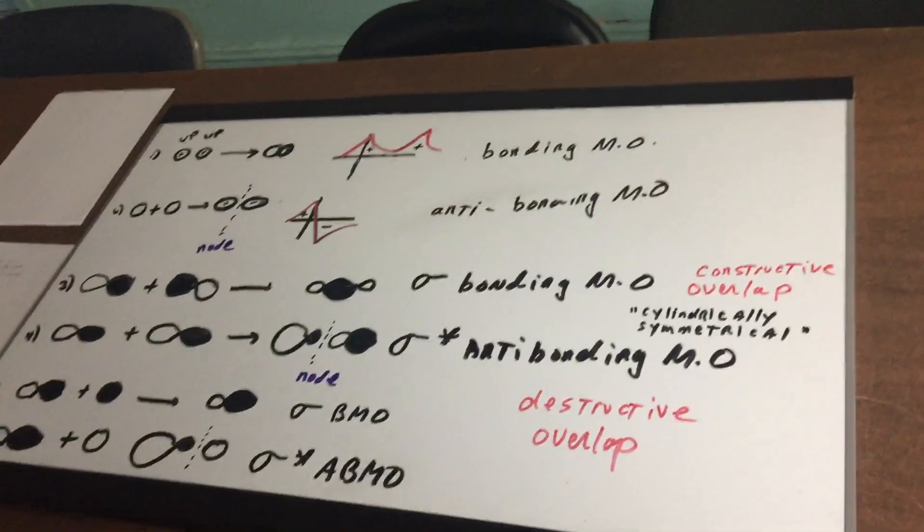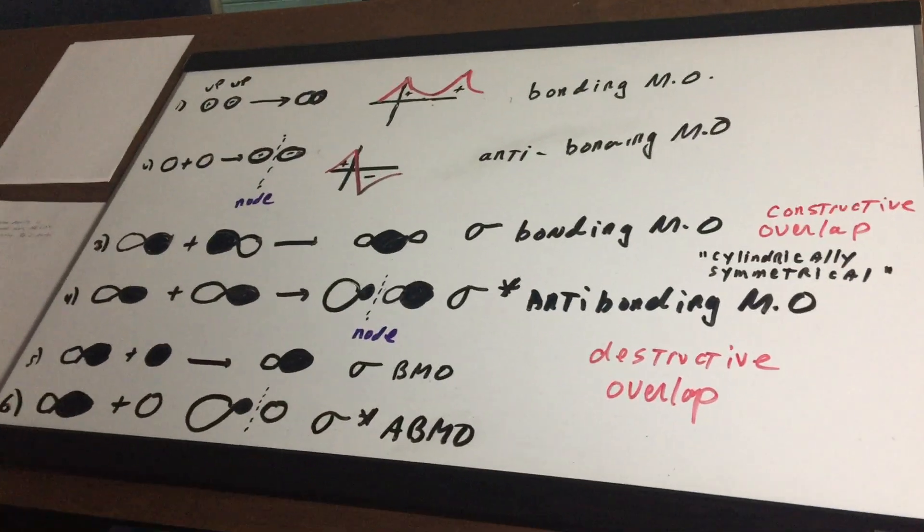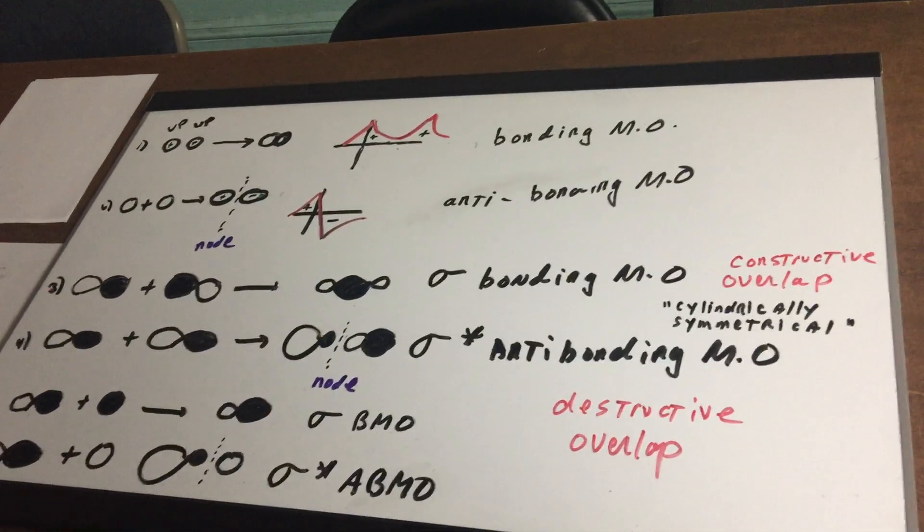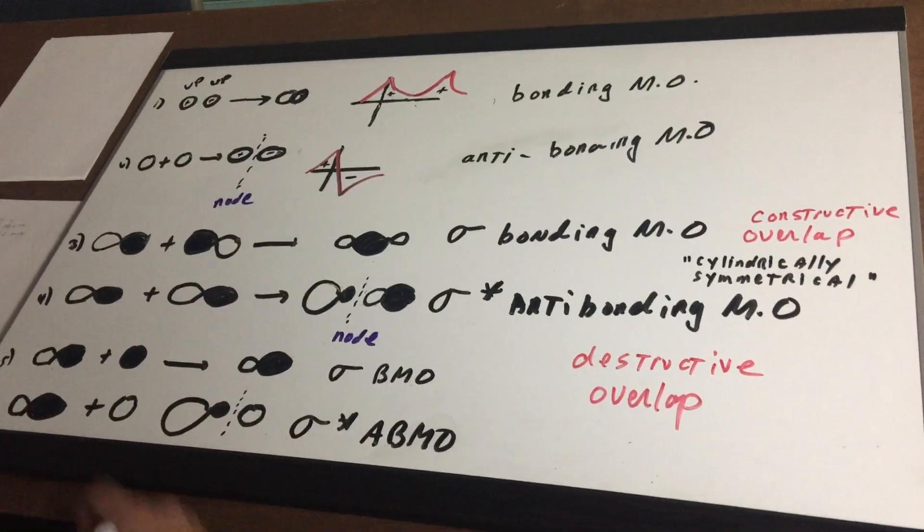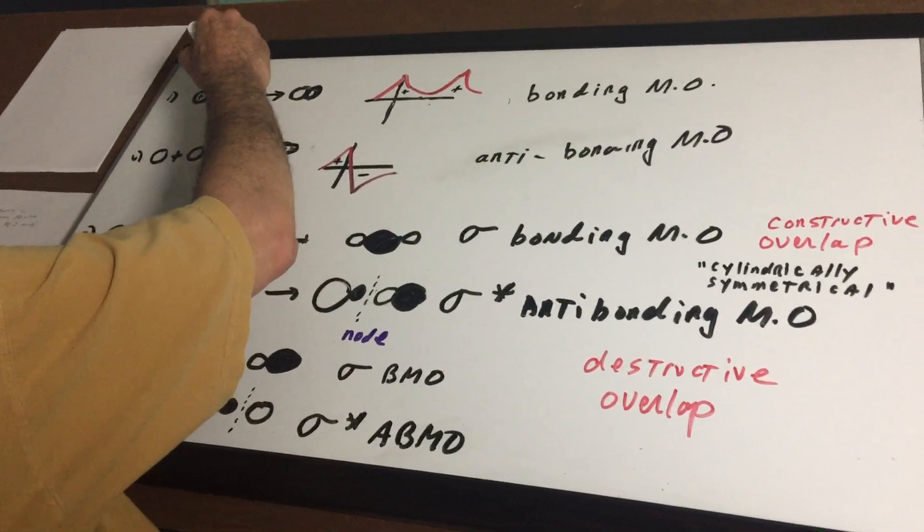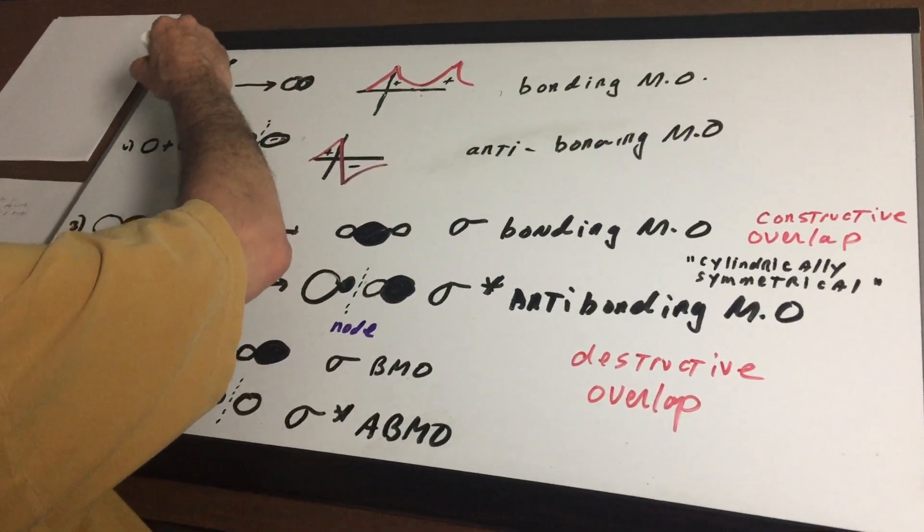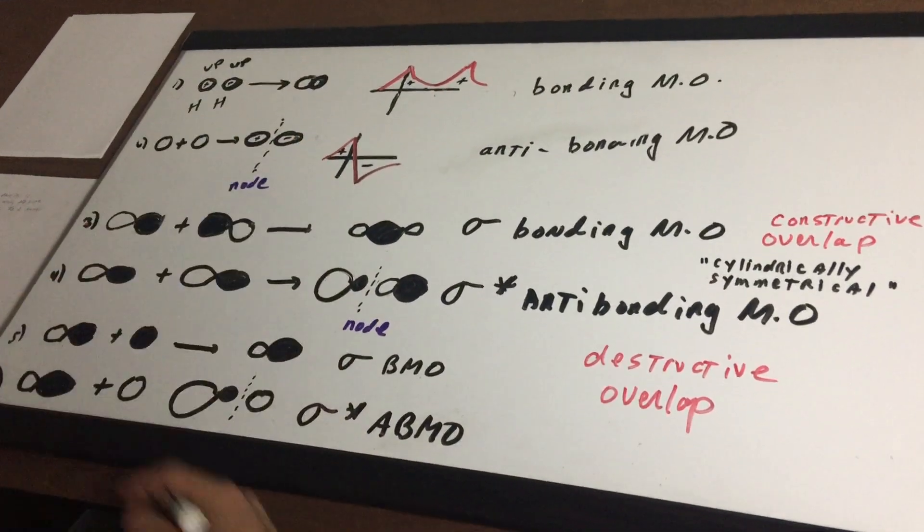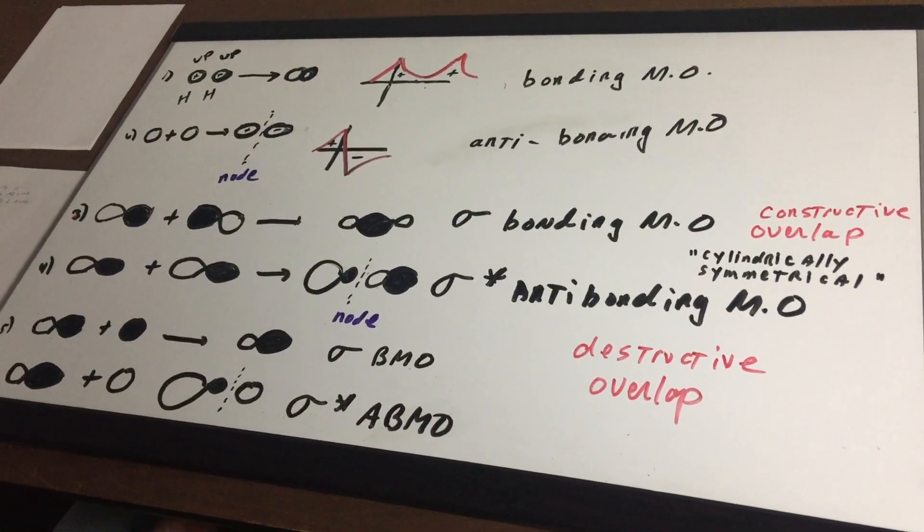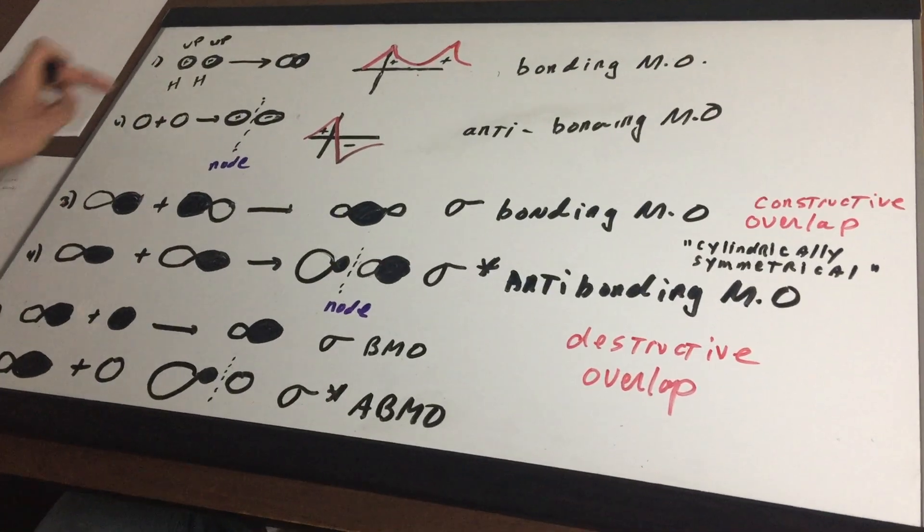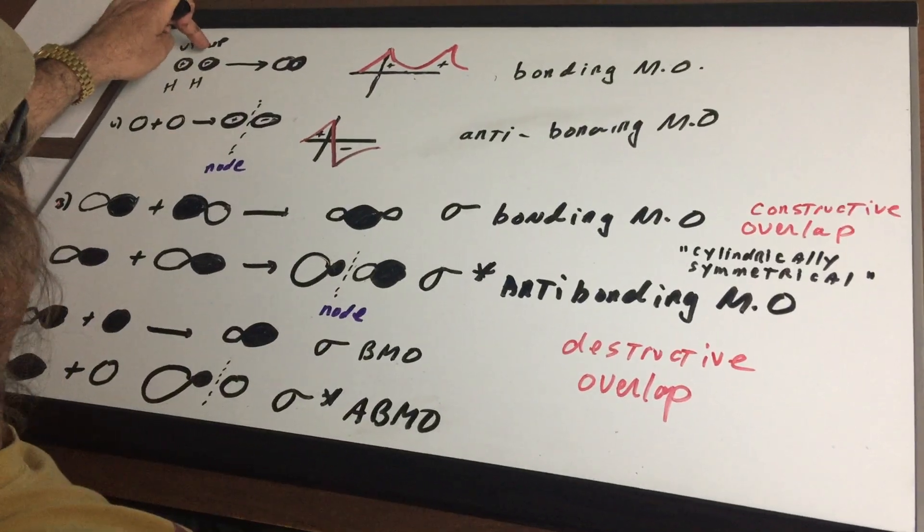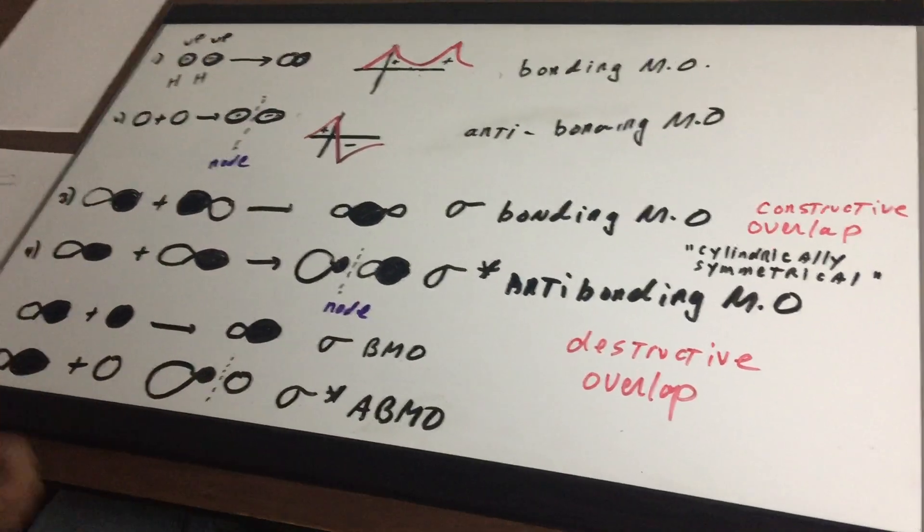So come around and let's have a quick look. Now when I draw a hydrogen atom we're going to look at the area of space where we can find an electron and I'm going to call that a little circle. So we're going to put two hydrogen atoms together. Now an electron can also be thought of as a wave. So if you see me draw a plus sign think of that as a wave that moves upward and a negative will mean a wave going down.